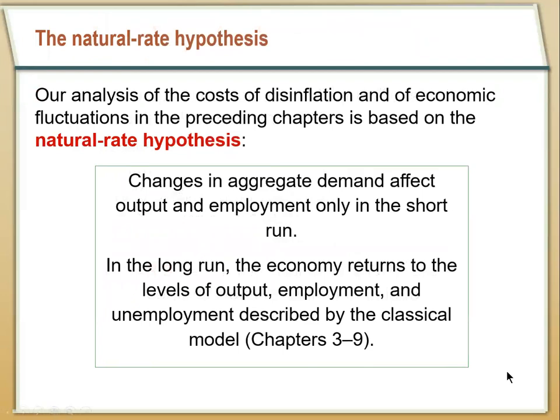So far, we've assumed the natural rate hypothesis — that the economy will always come back to the natural rate of unemployment and that we always return to the long-run aggregate supply curve, always coming back to Un and Y-bar. This assumption comes all the way from Chapter 3. But it's possible that these variables could change — the natural rate of unemployment could go up and down over time, and the long-run aggregate supply curve could move based on different factors in the economy.